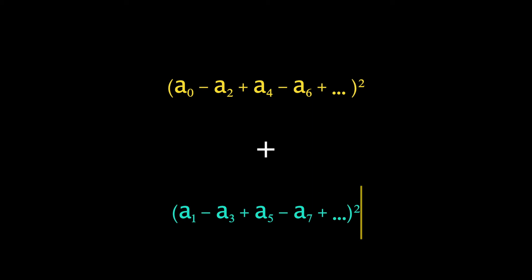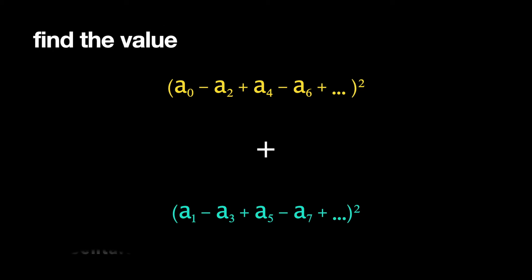We want to find the value of this complicated-looking expression — our goal is to find (a₀ − a₂ + a₄ − a₆ + …)² + (a₁ − a₃ + a₅ − a₇ + …)². Notice that this even-index and odd-index game is happening in this expression; it's quite interesting in that sense.